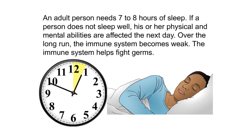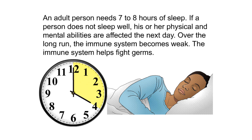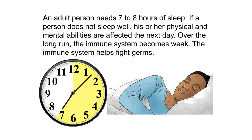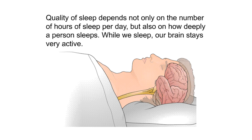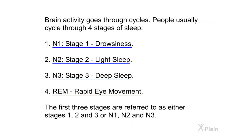An adult person needs seven to eight hours of sleep. If a person does not sleep well, his or her physical and mental abilities are affected the next day. Over the long run, the immune system becomes weak. The immune system helps fight germs. Quality of sleep depends not only on the number of hours of sleep per day, but also on how deeply a person sleeps. While we sleep, our brain stays very active and brain activity goes through cycles.